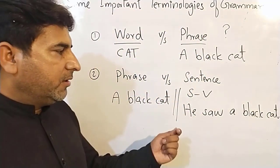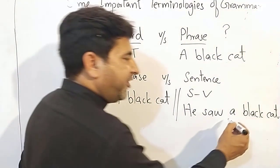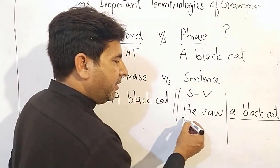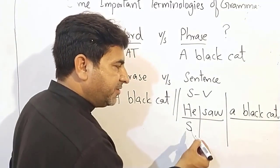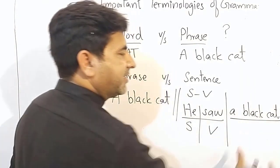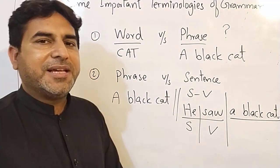To students kya baat samajh aayi ke phrase ke saath agar hum ye do cheezein add kar dein, doer of the action subject and this action yaani verb. In dono ko kisi bhi phrase ke saath attach karein, it becomes a sentence.